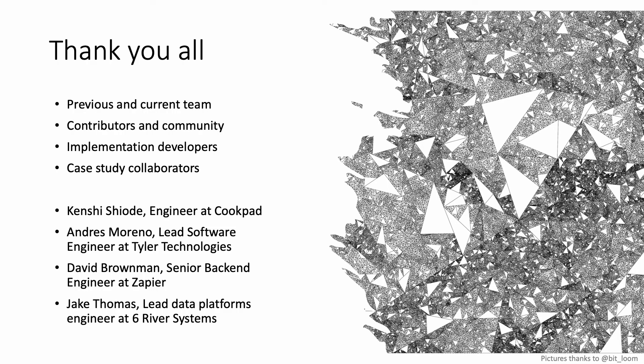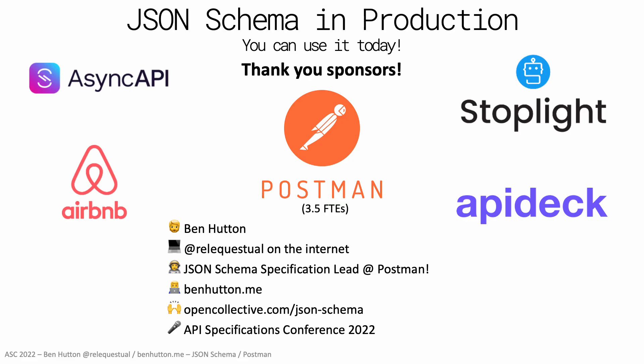A huge thanks to all the previous and current team, contributors and community, implementation developers, and those willing to collaborate and share details of the case studies shared today. Thank you to our sponsors on Open Collective: Retool, ASIN KPI Initiative, Stoplight, Airbnb, API Deck, and of course Postman — now employing people, including myself, full-time to work on JSON Schema. If you're interested in sponsoring JSON Schema, please visit our Open Collective or feel free to reach out. Although we have a few full-time employees now, there's still so much more we can do. Thank you for having me here at ASC 2022 — my name's Ben Hutton, and thank you for listening. I'll be open for any questions you might have.